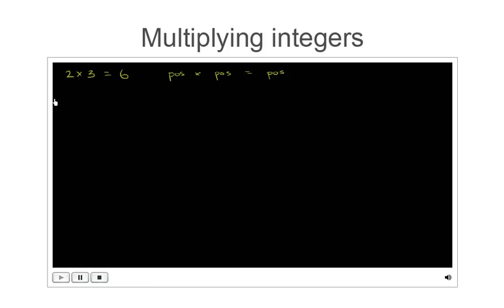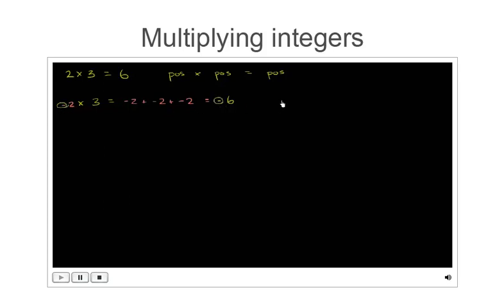Now let's introduce some negative numbers. What happens if we had negative 2 times 3? One way to think about it is that negative 2 is repeatedly added 3 times: negative 2 plus negative 2 plus negative 2 equals negative 6. Another way: 2 times 3 is 6, but because one of the two numbers is negative, the product is negative. So a negative times a positive gives a negative.